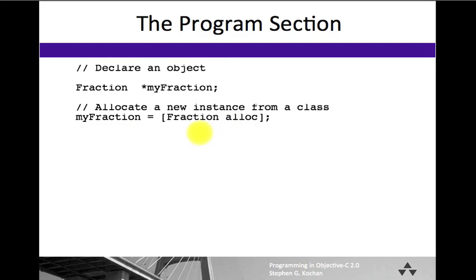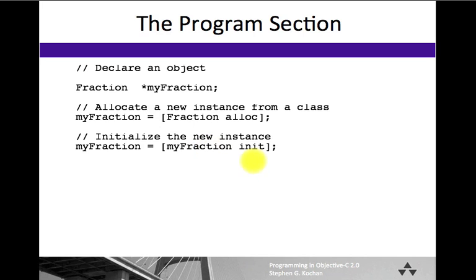We saw how we could allocate a new fraction object by sending the alloc message to the Fraction class, taking the result that comes back and storing it in the myFraction object. We also saw that once we have allocated an object, we need to initialize it. We do that by sending the init method to the object, storing the result back inside the object variable itself.